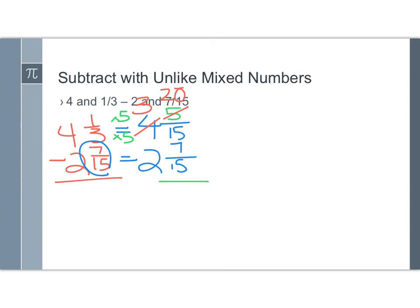20/15 minus 7/15 is 13/15, and 3 minus 2 is 1. I cannot simplify this any further, so my answer is complete, 1 and 13/15.